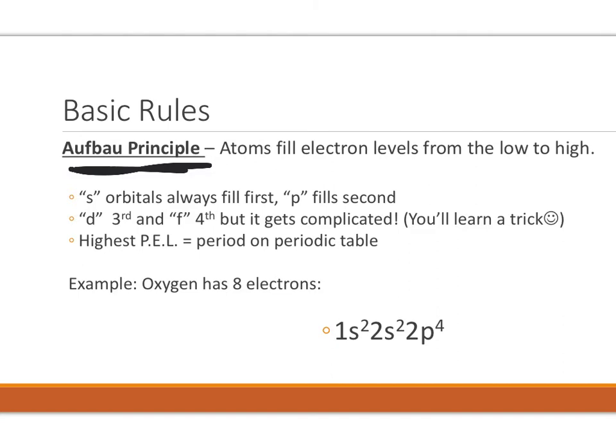The other thing that's helpful when you're doing these electron configurations is this: the highest principal energy level, the highest electron energy level, is equal to the period in the periodic table. So if it's on the second row, the second period, for example oxygen is in the second period, then its highest energy level is going to be two.